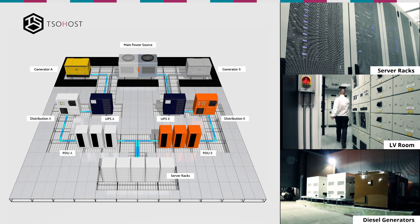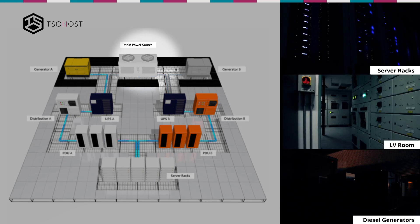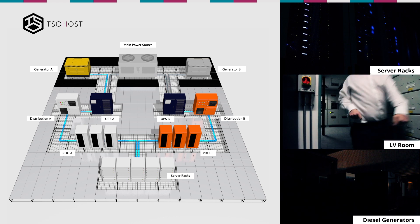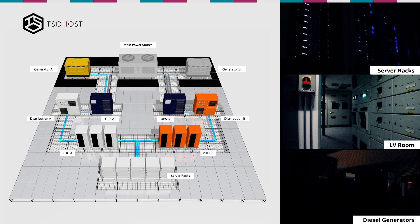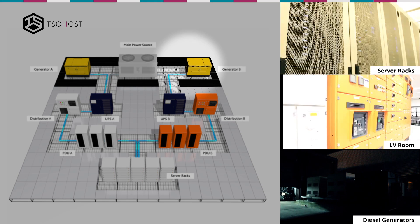Next, we turn off the B side mains. The lights are fed from the B side non-critical supply and you will see them go off at this point. The servers, however, are still fed from both UPSs. You will again hear a drop in noise from the air handlers. The B side generator changeover controller will then signal the generator to start and once started, load is transferred to the B side generator.